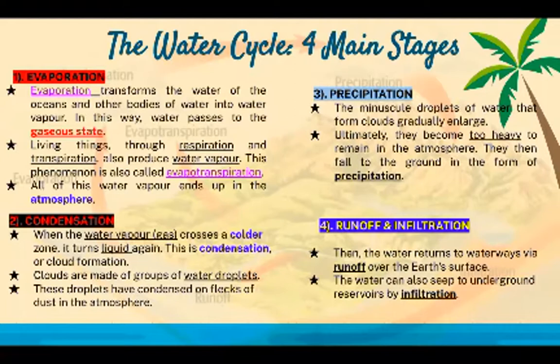Four: runoff and infiltration. When precipitation falls to the ground, the water returns to the waterways via runoff over the Earth's surface. The water can also seep into underground reservoirs by infiltration.